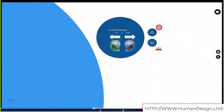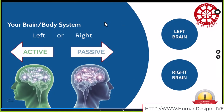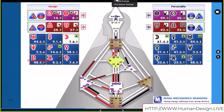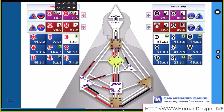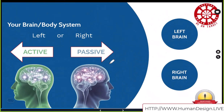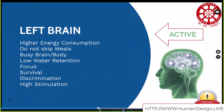If you have a left-facing arrow — the top left arrow that is either pointed right or left — and it's pointed right like mine, you are passive in your brain-body system. If it's left, you are active with your brain-body system. Some people get confused and think it's just the brain — it's not. It is your brain and your body's way of processing life.